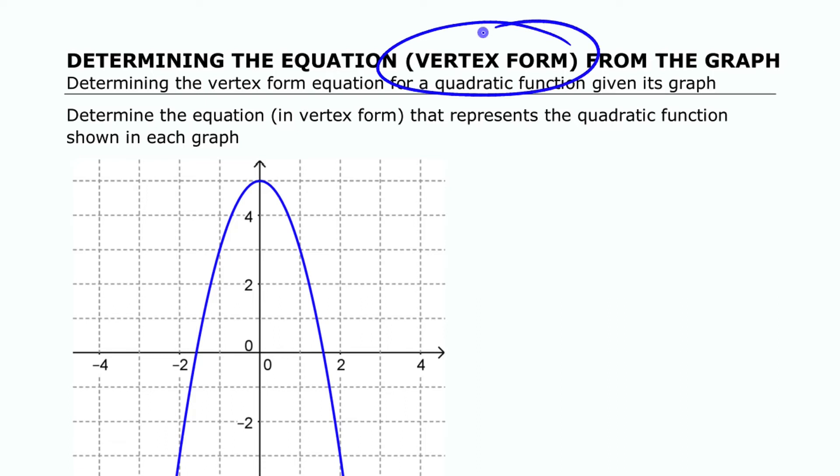Looking at finding the vertex form equation given the graph where we can see some points and the shape, we are going to start with our basic vertex form equation, a(x - h)² + k, and we're going to fill in what we know here. We can see that the vertex is 0, 5. That's where our vertex is.